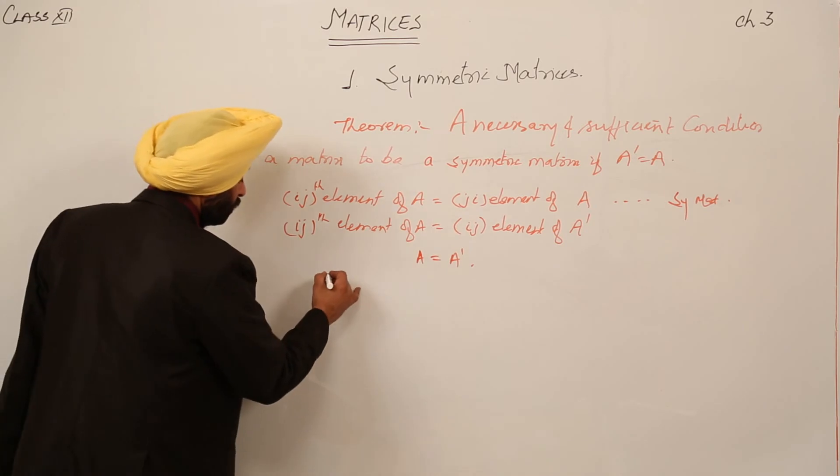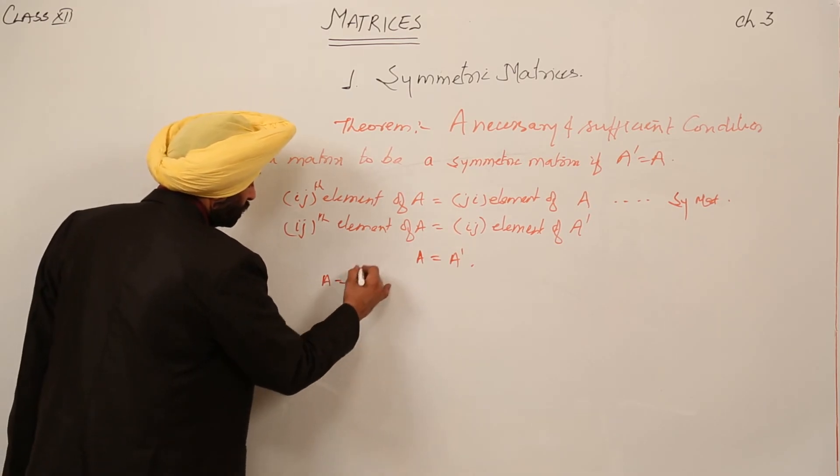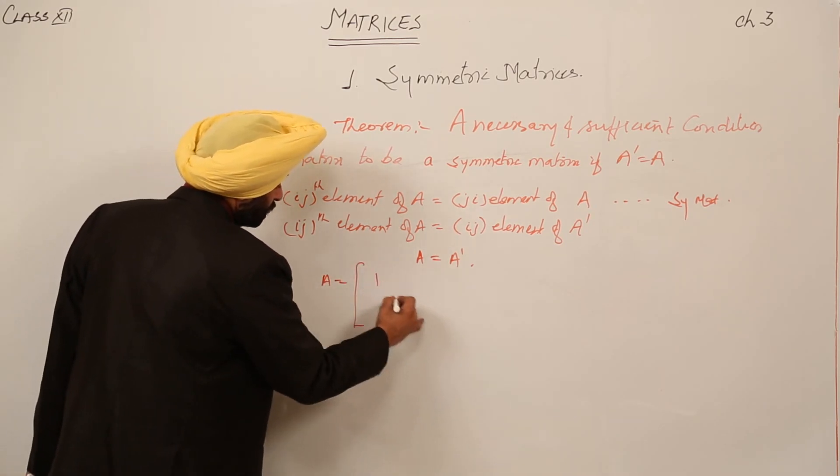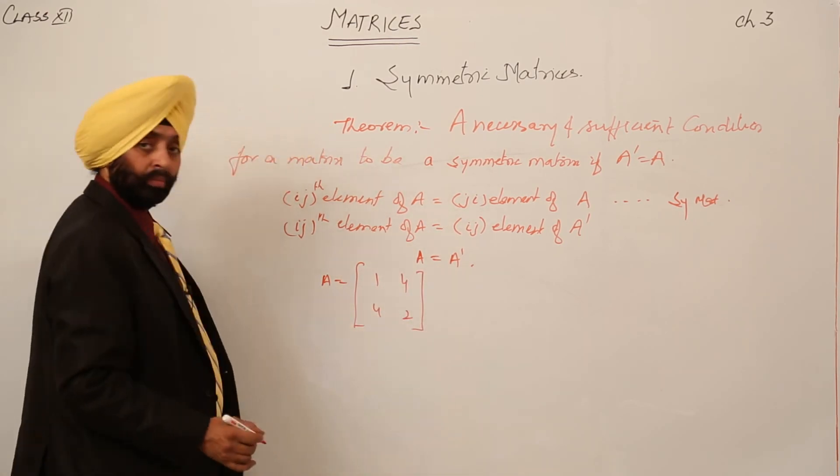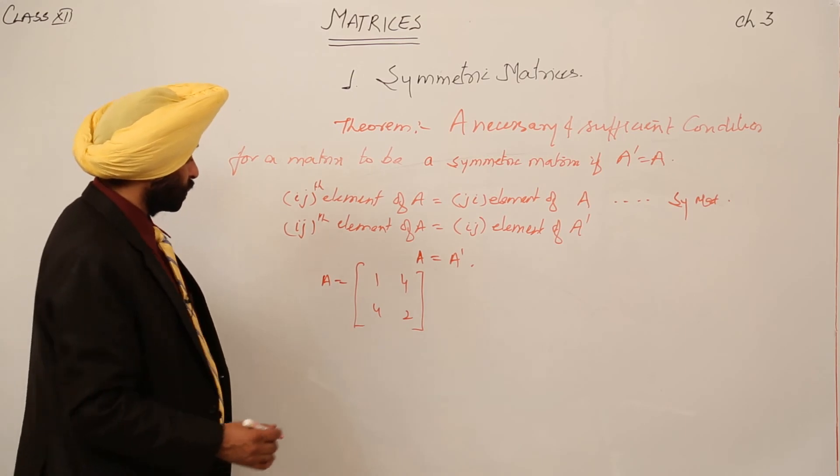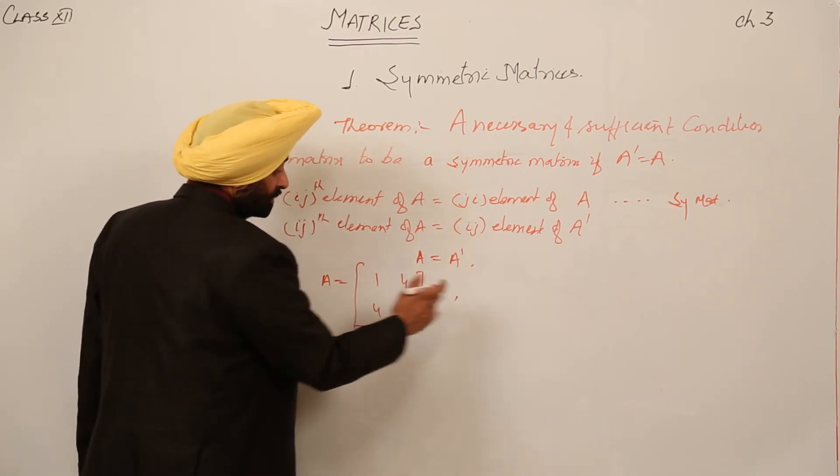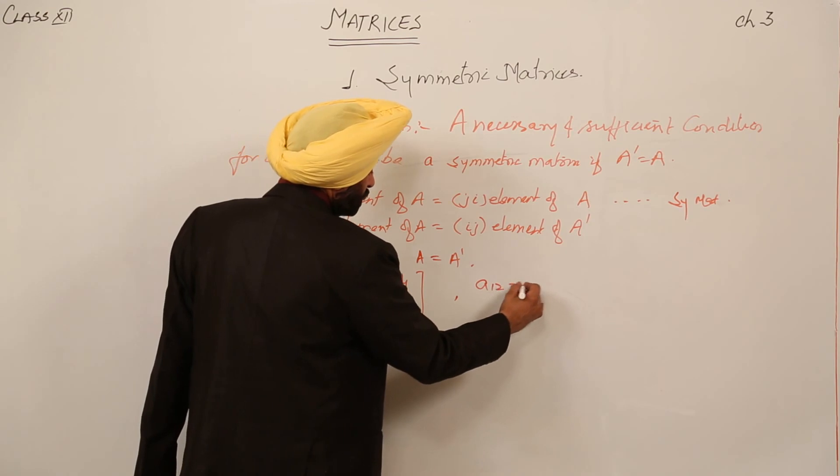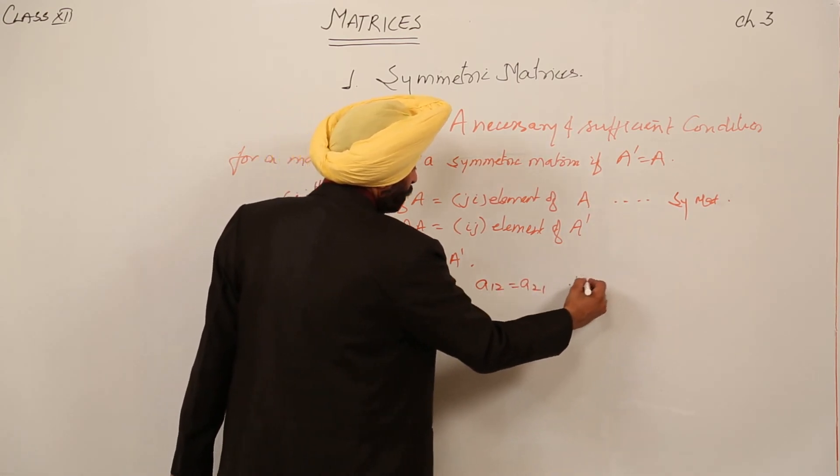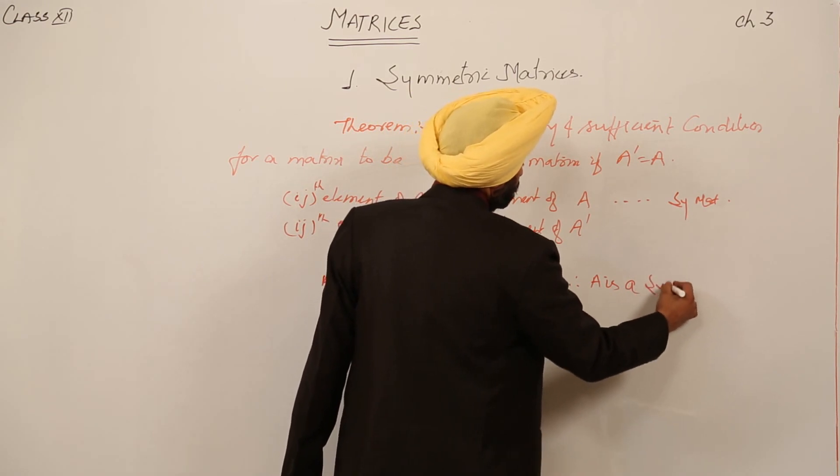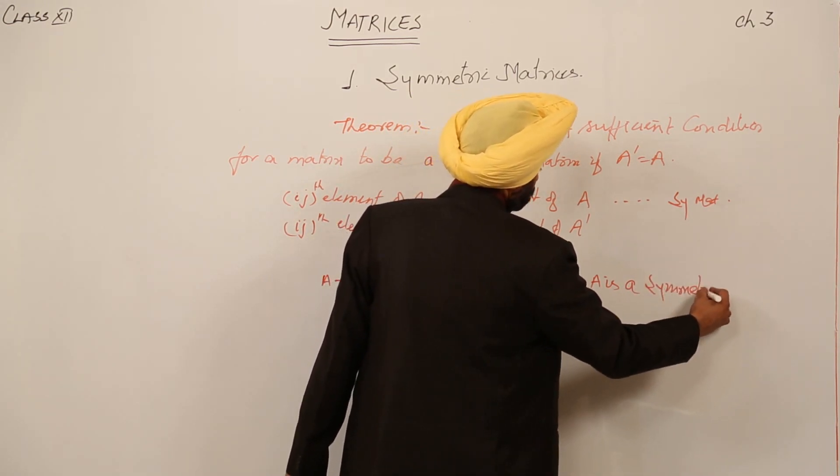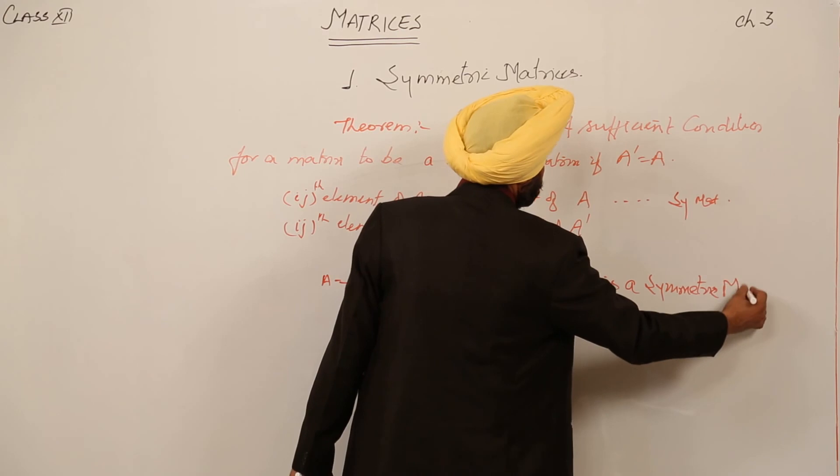Second thing. We are having A equal to, suppose it is 1, 4, 4, 2. What is this? A_12 is equal to A_21. Therefore, A is a symmetric matrix. It is a symmetric matrix.